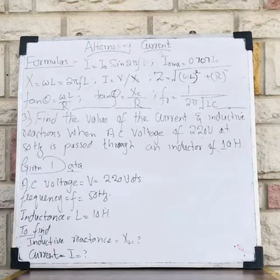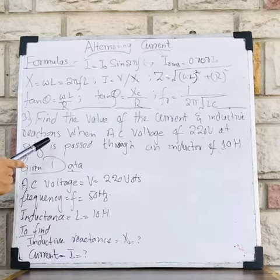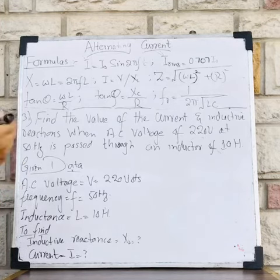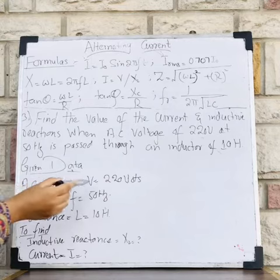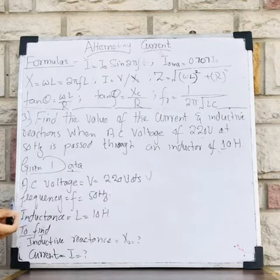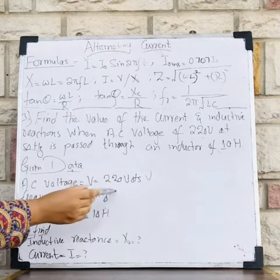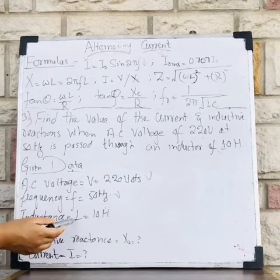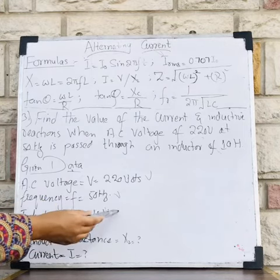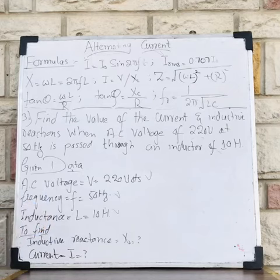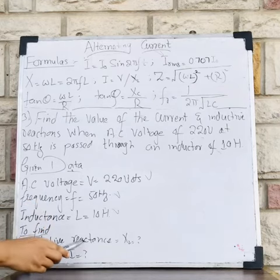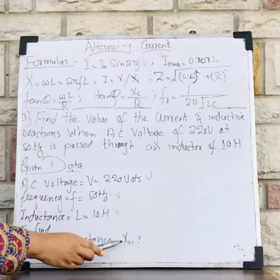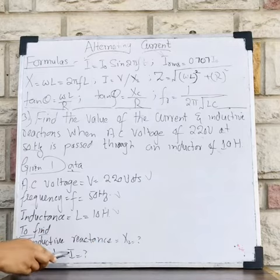From there, I have AC voltage which is 220 volts, this is my first data. Frequency is my second data, which is 50 Hertz. Furthermore, inductance is represented with capital L and is equal to 10 Henry, this is my third data. The demand is inductive reactance, which is represented with capital XL, and current, which is represented with capital I.